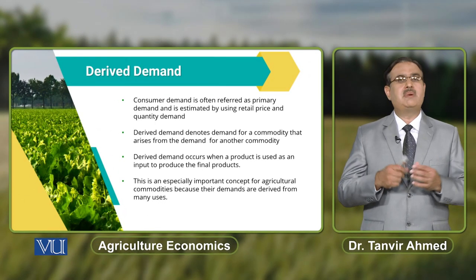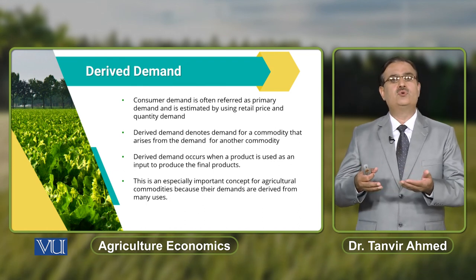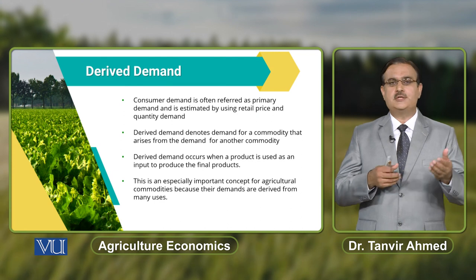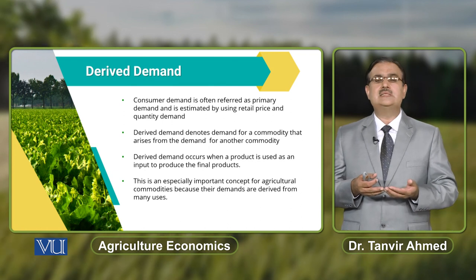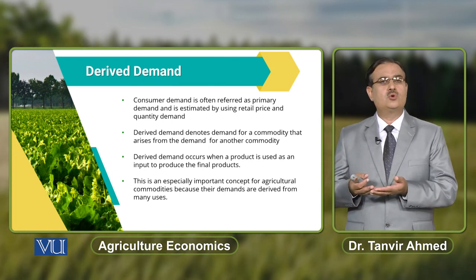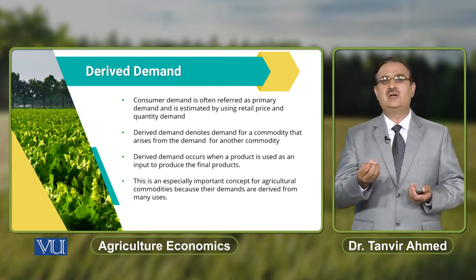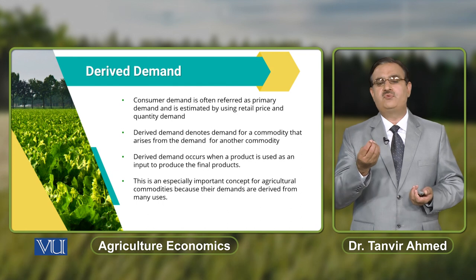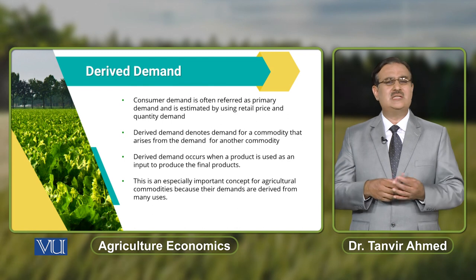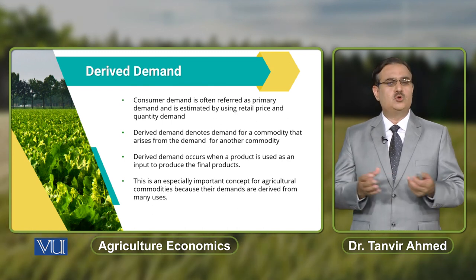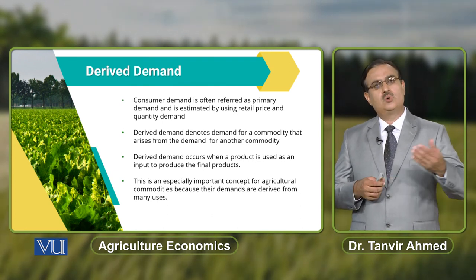For example, let's talk about fruits. There is a demand for fruits at the retail level that simply depicts the association between quantity demanded and price. But when you talk about derived demand for fruits, that demand arises because of demand for packed fruits. To produce packed fruits, the basic ingredient required is again the fruits themselves.